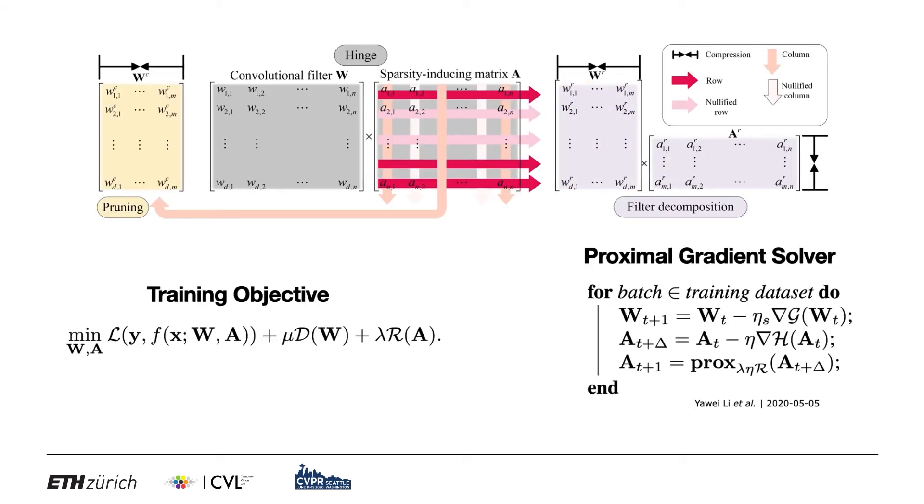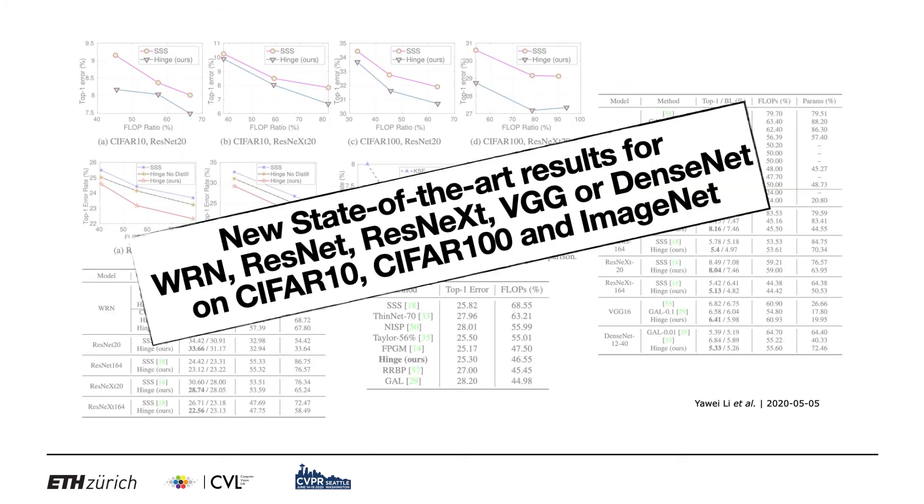This is why we developed group sparsity for compression. We add a null sparsity inducing matrix A. Reinforcing group sparsity on the columns of A nullifies columns and leads to pruning. Similarly, group sparsity on the rows of A nullifies rows and leads to filter decomposition. Thus, both techniques are unified in the same algorithm simply by changing the way the regularizer acts. To solve the optimization problem, we propose a novel proximal gradient based solver. We achieve new state-of-the-art results for various networks on multiple datasets.